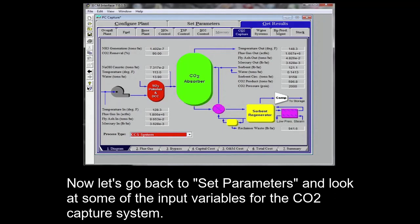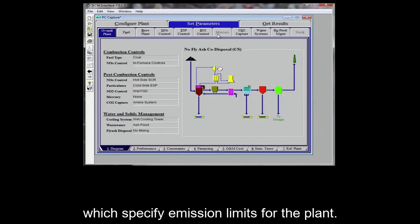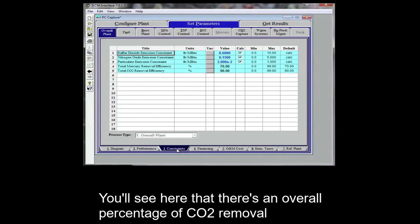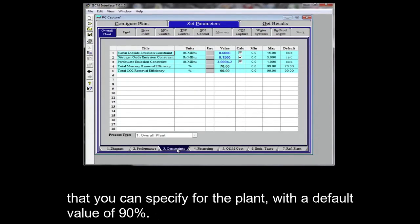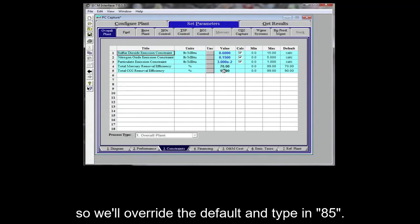Now let's go back to set parameters and look at some of the input variables for the CO2 capture system. I want to start on the overall plant tab and look first at the constraints on the bottom which specify emission limits for the plant. You'll see here that there's an overall percentage of CO2 removal that you can specify for the plant with a default value of 90 percent. But for this example, let's say we only want 85 percent removal, so we'll override the default and type in 85.